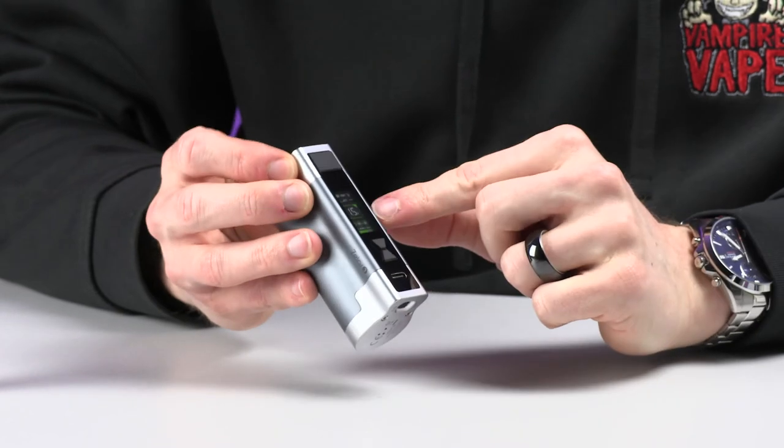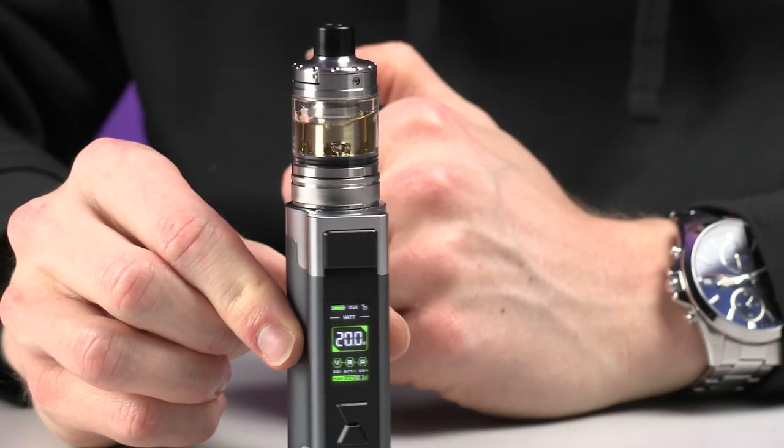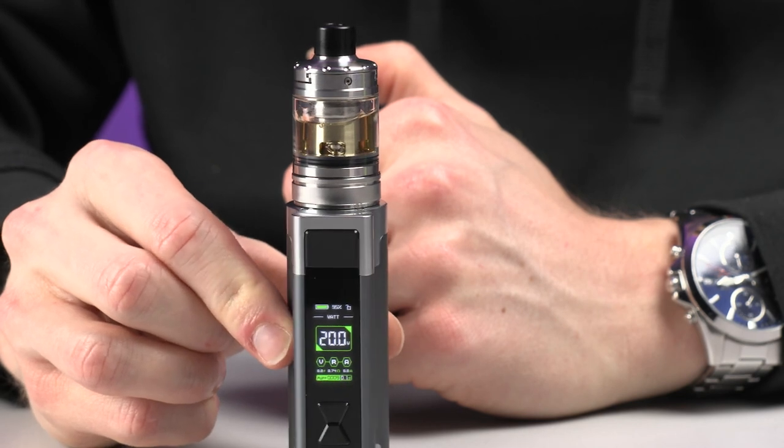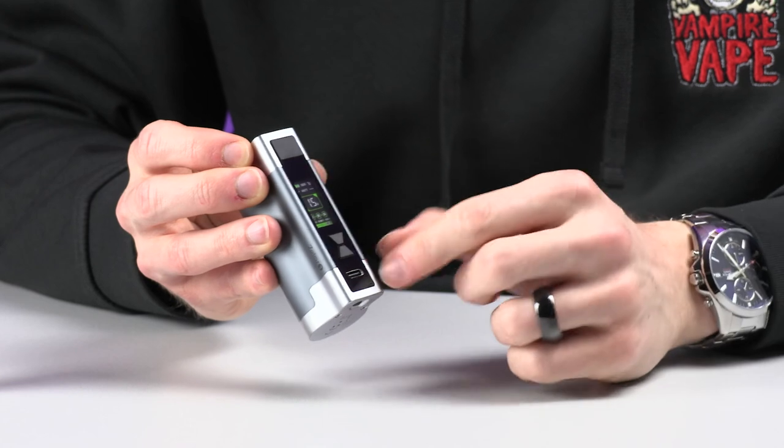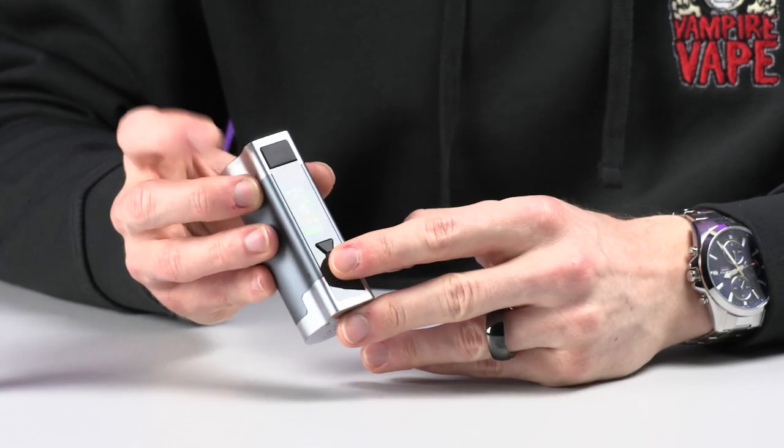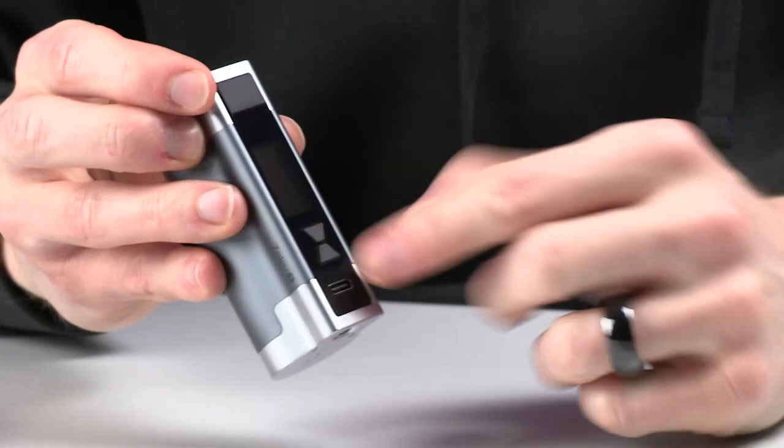So on the screen, we have our wattage, we have a puff counter, we get a battery life as well, and some other options. So what you can do to clear the puff counter is hold the minus button, or the down button, and the fire button, and that will clear the puff counter.